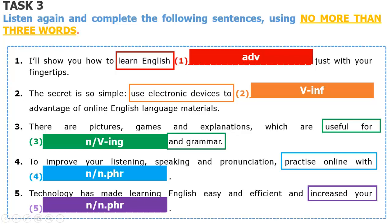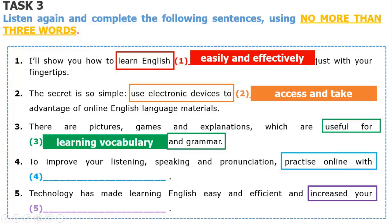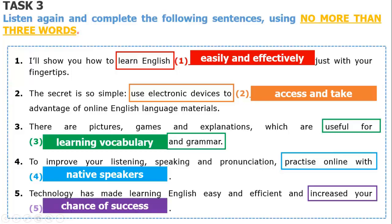Have you finished yet? Let's check the answers. The answer for number 1 is: easily and effectively — it matches what we predicted. How about number 2? As we guessed, the answer is: access and take. How about the next one? Learning vocabulary is the answer for that gap. Gap number 4 is filled in with: native speakers. The answer for the last one is: chance of success.